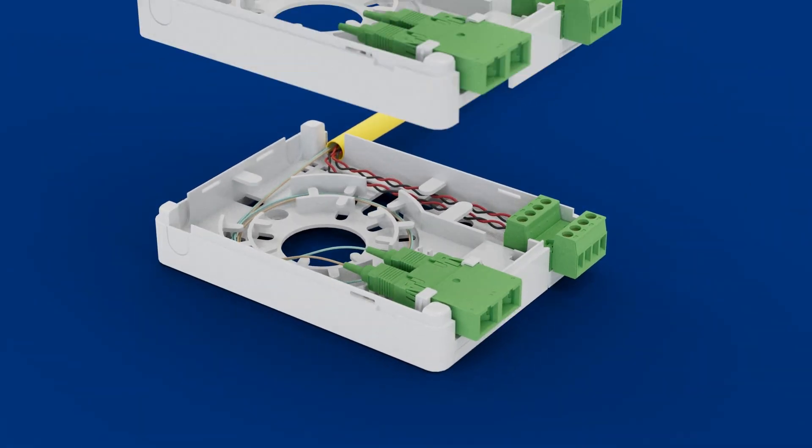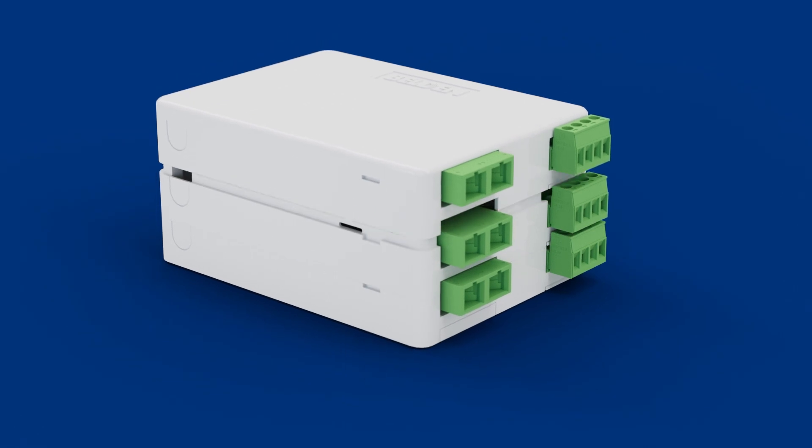Add density by simply stacking one Duet Connect Hybrid Termination Box on top of another.